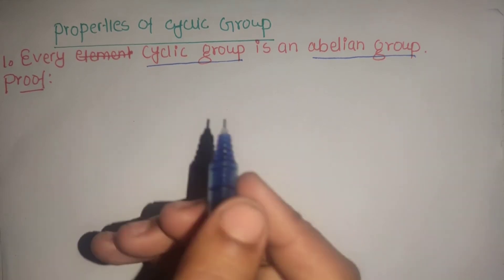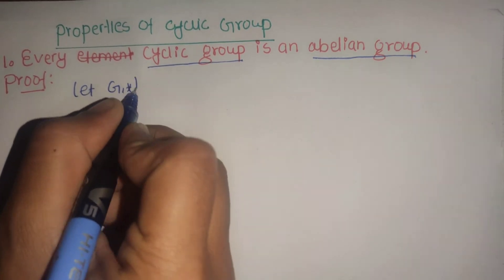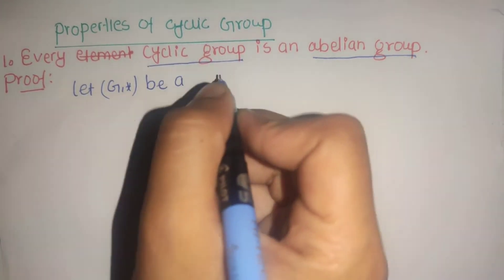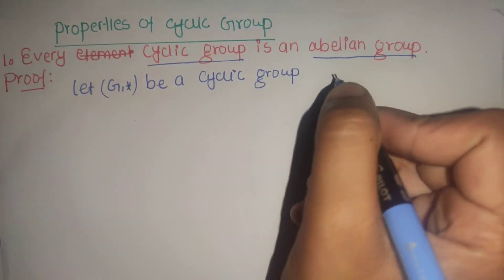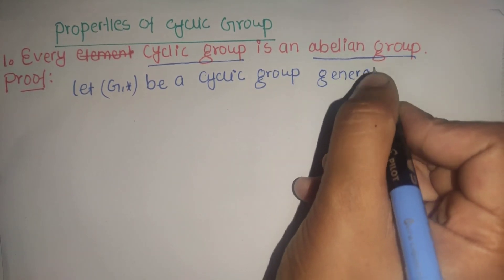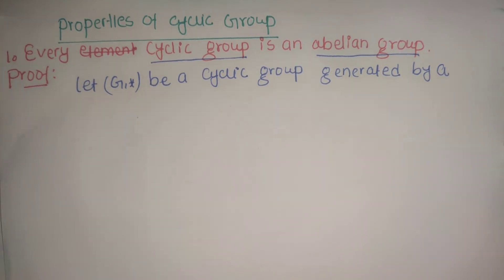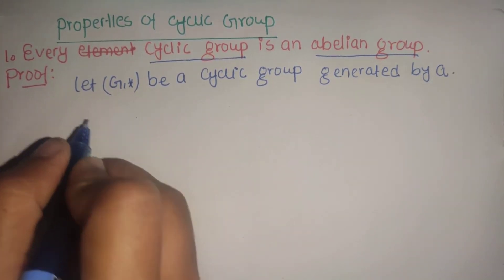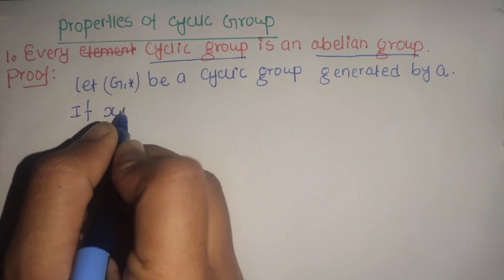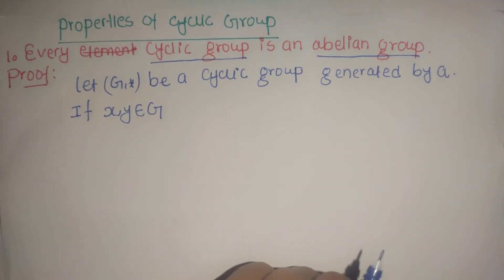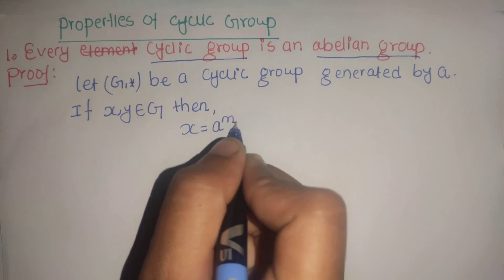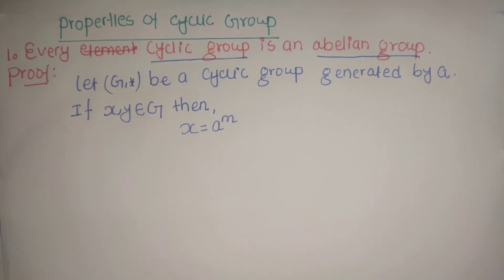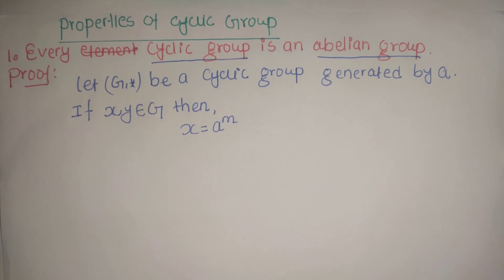By applying the definition of cyclic group: let G★ be a cyclic group, which is generated by 'a' — generated by 'a'. So if x and y belong to G, since every element of G must be expressible in the form of a power of 'a', if 'a' is the generator of G.